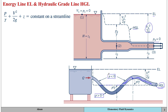All of this discussion about the hydraulic grade line and the energy line is restricted to ideal situations involving inviscid, incompressible, and steady flows. We also assume there are no sources or sinks of energy within the flow, meaning no pumps or turbines are involved. We are neglecting those situations and only looking at ideal scenarios.